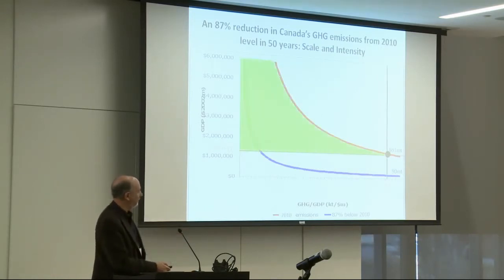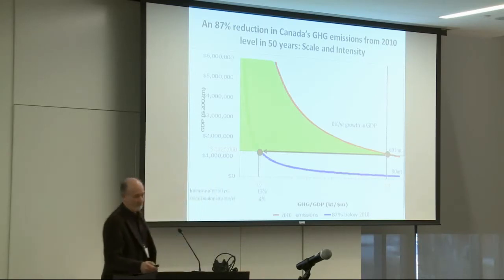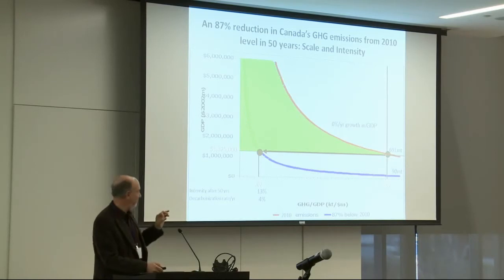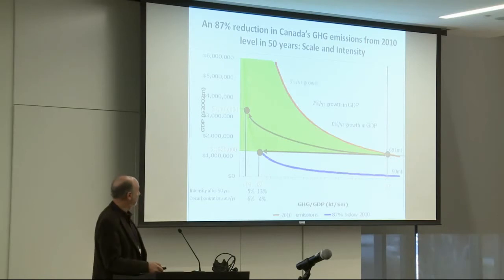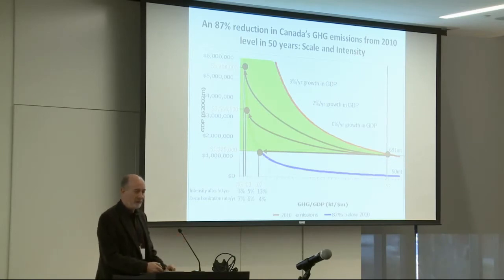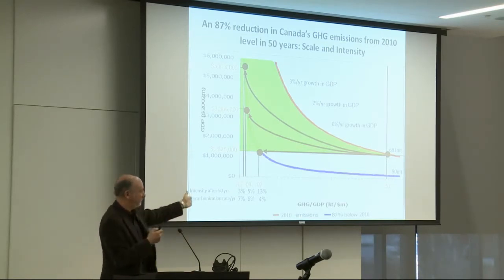Could we do that by green growth? Green growth is anywhere in that green triangle. With no growth we move just along the horizontal line and must get intensity down to 0.07 kilotons of greenhouse gases per million dollars of GDP — a decarbonization rate of 4% per year, with intensity only 13% of today's level in 50 years. That's an incredible accomplishment, and that's with no growth. With 2% growth you must decarbonize at 6% per year, and at 3% growth you've essentially got to squeeze all greenhouse gases out of every dollar of output.